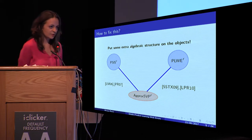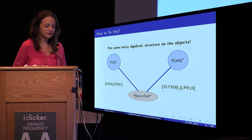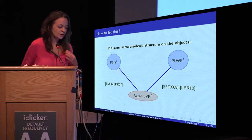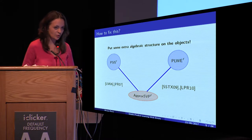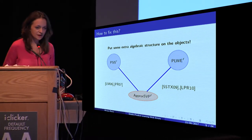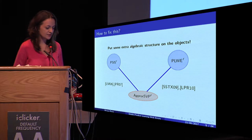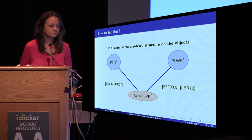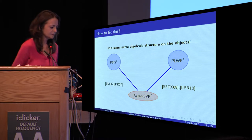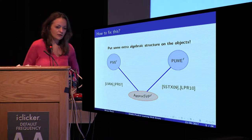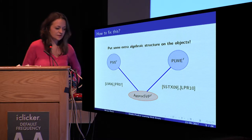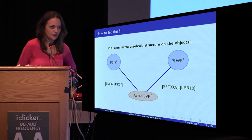They both make use of the algebraic structure of a ring, specifically ZQ of X modulo F, in order to increase efficiency. They also enjoy reductions from some lattice problems such as approximate SVP. However, these lattice problems are now restricted to a special class of lattices — ideal lattices — which correspond to ideals in number fields. One may wonder whether approximate SVP restricted to this special class of lattices is as hard as approximate SVP for general lattices, and in fact, it's not.